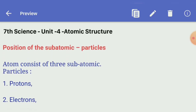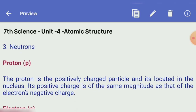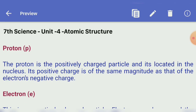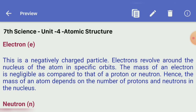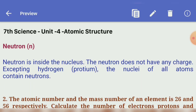Position of the subatomic particles: an atom consists of three subatomic particles — protons, electrons, and neutrons. Protons are positively charged particles located in the nucleus; their positive charge is of the same magnitude as the electron's negative charge. Electrons are negatively charged particles that revolve around the nucleus in specific orbits; their mass is negligible compared to protons or neutrons, so the mass of an atom depends on the number of protons and neutrons. Neutrons are inside the nucleus and have no charge, except in hydrogen protium. The nuclei of all other atoms contain neutrons.